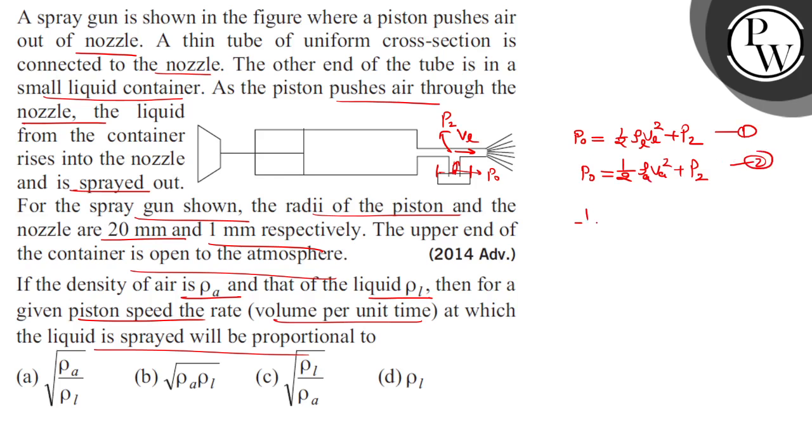v_l squared equals half rho_a v_a squared. Now we can see the liquid in the nozzle.